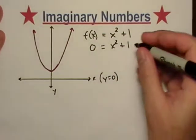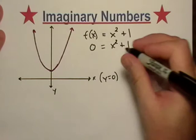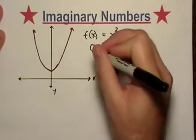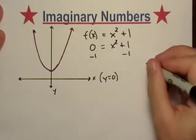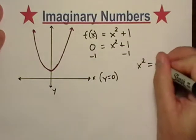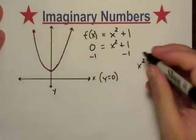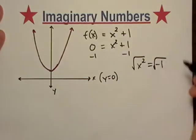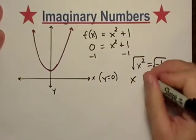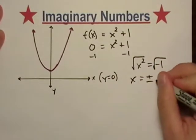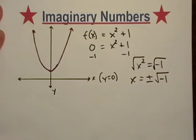So what do we get? This simplifies to, I subtract one from both sides and then I get x squared is equal to negative one. So I take the square root of both sides and then I end up with x is equal to plus or minus the square root of negative one.